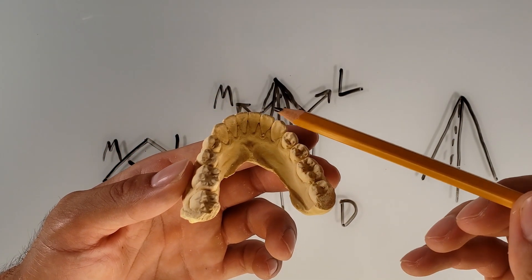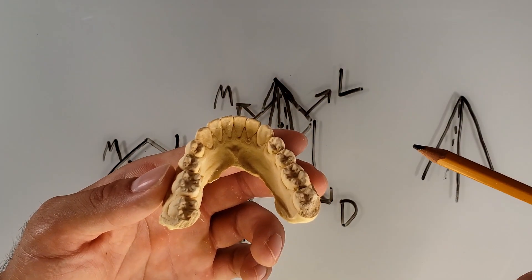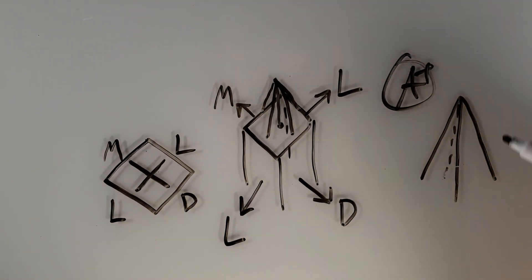So remember, the lingual, the mesial, the distal, and the labial. One cusp, four ridges. This is Chase Raborty with the game plan for your academics.